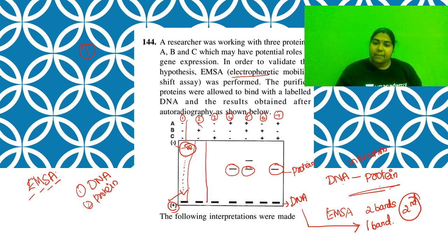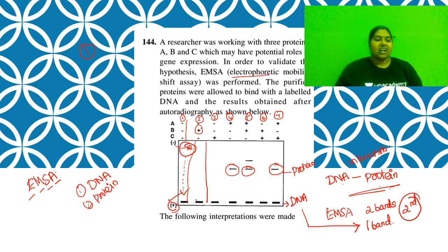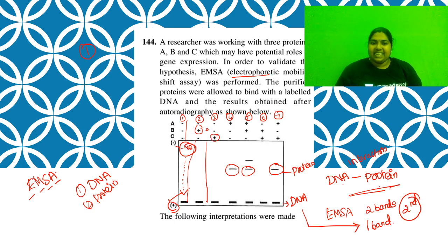In the second lane, protein B is added. This protein B is not making an interaction with the DNA, so you didn't see any band for protein B. In the third lane, protein C is added - C is also not interacting with the DNA, so no extra band is seen there either.